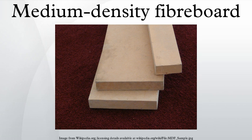MDF does not contain knots or rings, making it more uniform than natural woods during cutting and in service. However, MDF is not entirely isotropic, since the fibers are pressed tightly together through the sheet. Like natural wood, MDF may split when wood screws are installed without pilot holes, and MDF may be glued, doweled, or laminated, but smooth shank nails do not hold well.